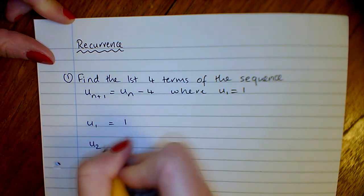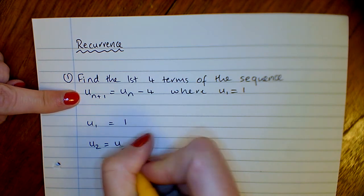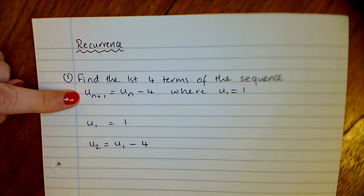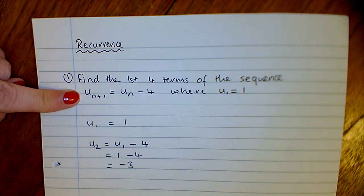To get our second term then, our second term is going to be our first term minus 4. So that's 1 take away 4, which is minus 3.